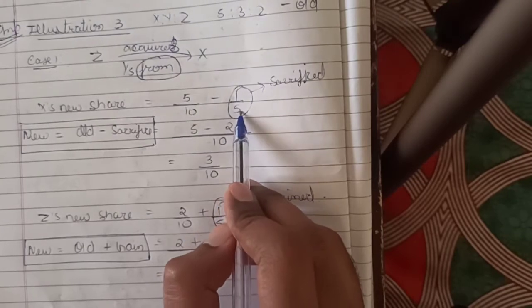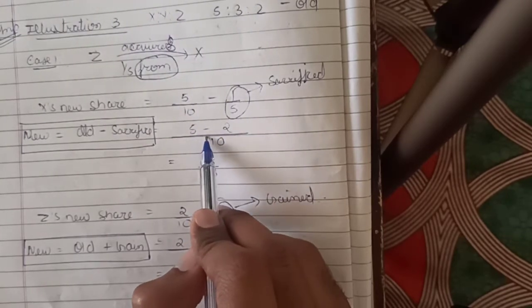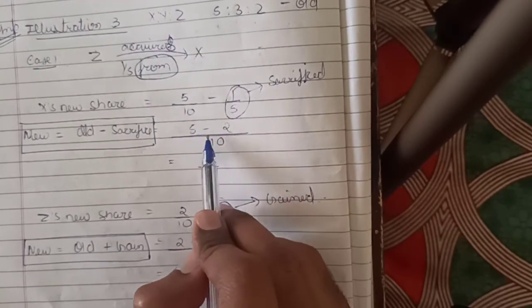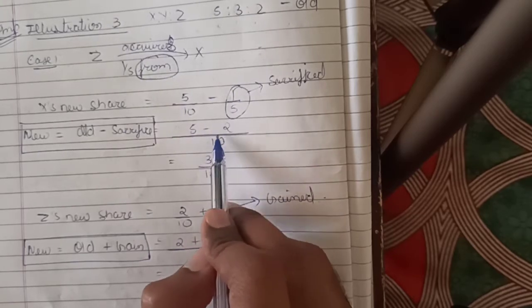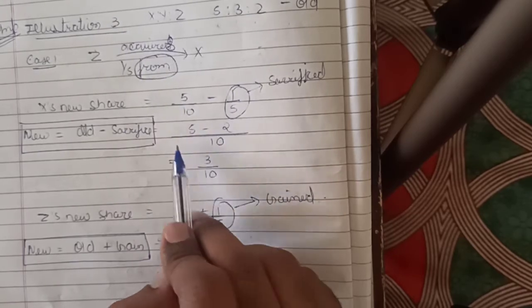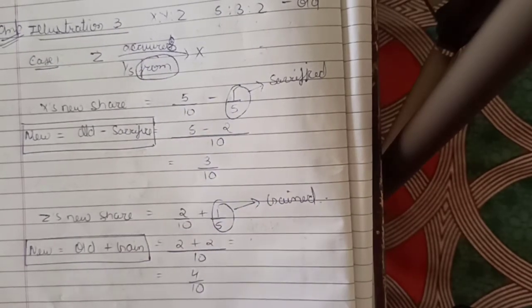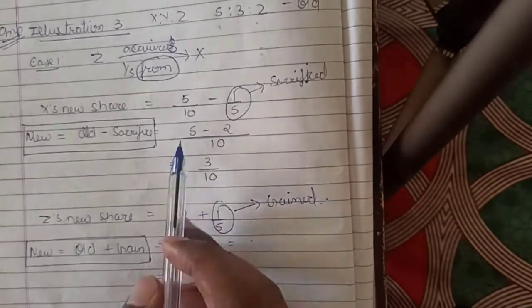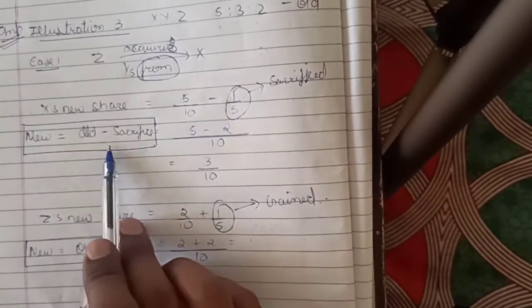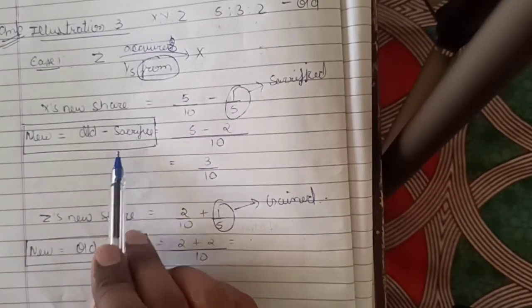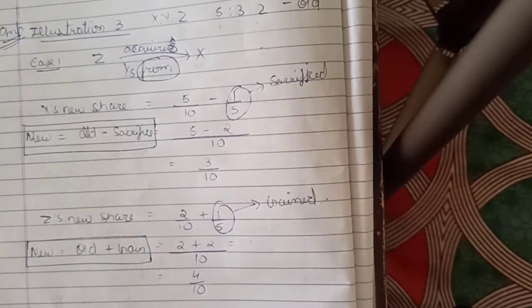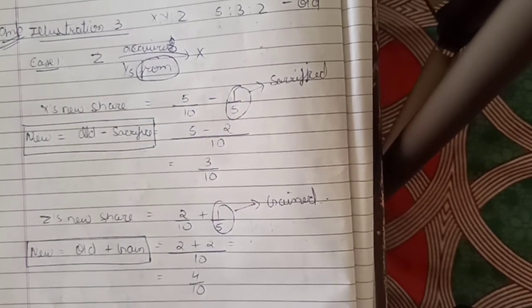We take the LCM as 10 and do the calculation. This is the same formula that we were using for sacrificing ratio — old ratio minus new ratio.